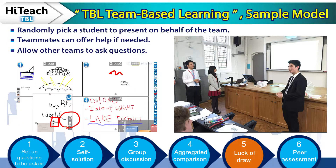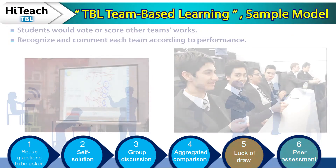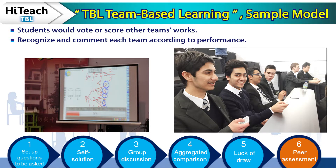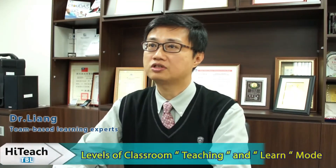Step five: lock up the draw. A randomly selected student will come to share the group's answer. The student's performance will represent the team's achievement, which can effectively promote mutual learning and teamwork. If the student is not confident in presenting, the teacher can offer encouragement and other students from the same group can also come to the rescue. Step six: peer assessment. All students will assess each group based on performance scores. The teacher will then supplement commentary and recognize each group according to the team's final performance.